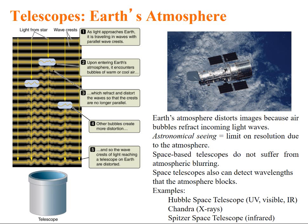Space based telescope do not suffer from atmospheric blurring. Space telescope can also detect high energy radiations also that the atmosphere blocks. Example, Hubble space telescope use UV, visible, and IR while Chandra uses X-ray and Spitzer space telescope uses infrared.